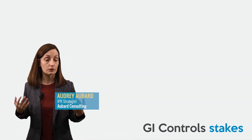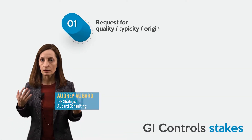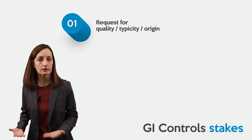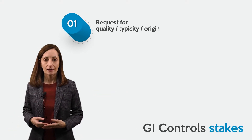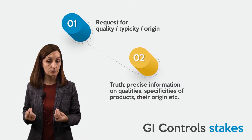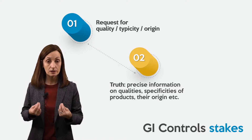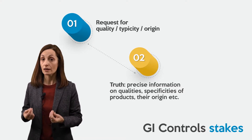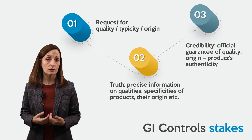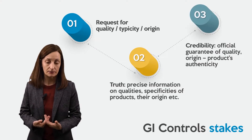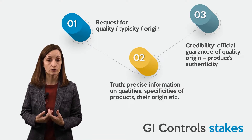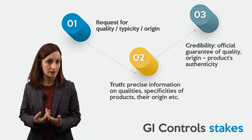What are the GI control stakes? First of all, there is a request for quality, typicity of the product, and origin of the product. There is the guarantee of the truth — it means precise information on qualities, specificities of the product, and also the origin of the product. There is also a commitment of credibility: an official guarantee of quality, origin of the product, or its authenticity.